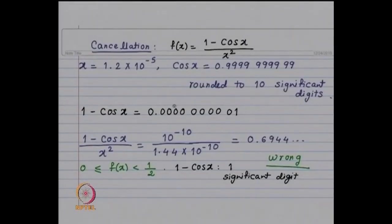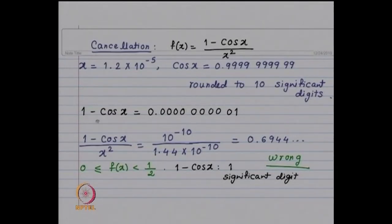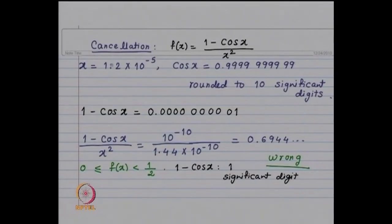Now let us see what happens in cancellation. When you subtract two numbers which are about the same, there is going to be a loss of precision. We have f(x) = (1 - cos x) / x². Suppose x = 1.2 × 10⁻⁵ and cos x is rounded to 10 significant digits. When you look at 1 - cos x, you get 0.0000000001, which has only one significant digit. So you started with 10 significant digits and in 1 - cos x you have only one significant digit — there is a lot of cancellation.